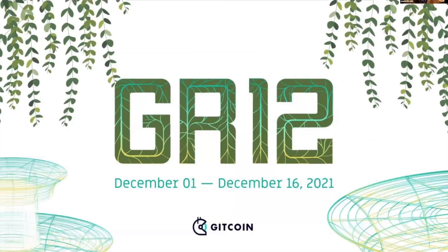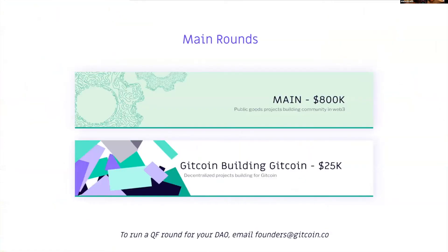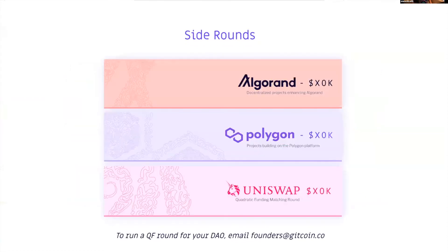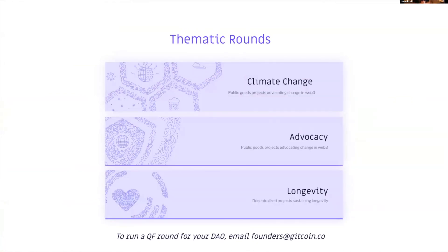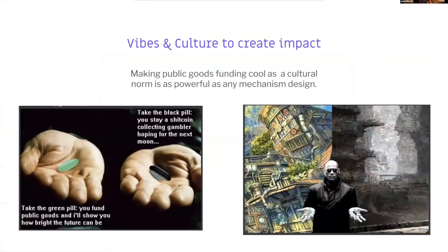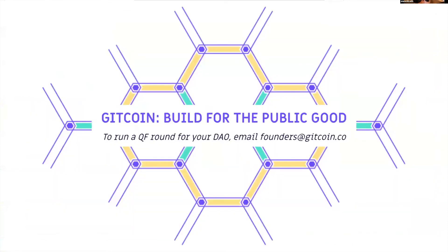Grants Round 12 is the next quadratic funding round, running December 1st through December 16th. We're running a main round of about $800K, building Gitcoin DAO with a $25K round, and doing side rounds with Uniswap, probably Polygon, and maybe Algorand and others. We're also starting thematic rounds around climate change, advocacy, and longevity research. I'm excited to be funding public goods using quadratic funding and Gitcoin Grants. If you're interested in being involved or want to run a side round, please send an email to founders@gitcoin.co.